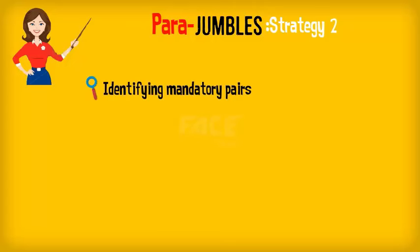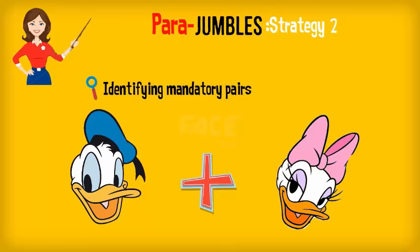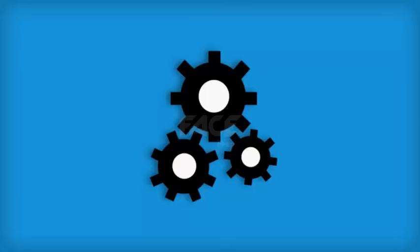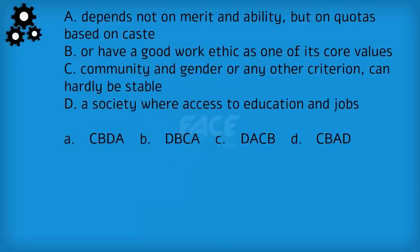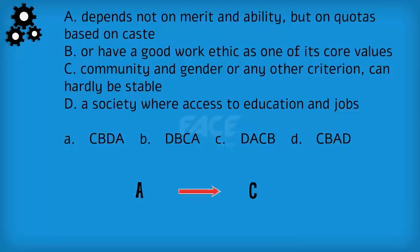Strategy number 2: Identifying the mandatory pairs. Some sentences must be a pair — they must precede or follow the other. Eliminate any answer option that does not contain this mandatory pair. For example, in this para-jumble, statement A ends with the word 'caste' and statement C starts with the words 'community and gender.' We know that caste, community, and gender are always used together, so nothing will come between them. Thus, we can establish a very strong AC link, and since there is only one answer option with an AC link, option C is the answer.